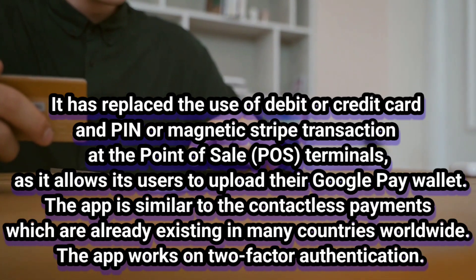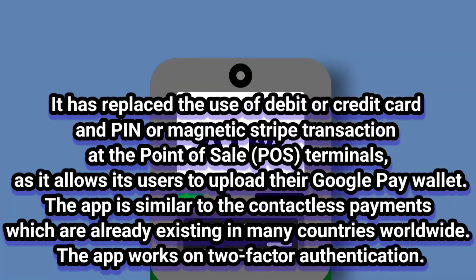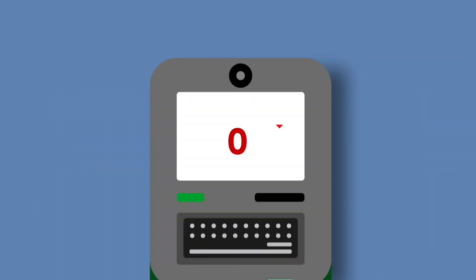How to start Google Pay: sign in at pay.google.com and add a payment method. If you have already paid for a Google product or service, you will already see information like payment methods and addresses in your Google Pay profile.